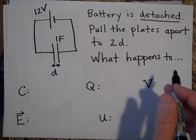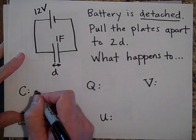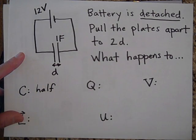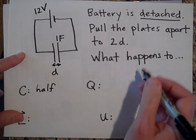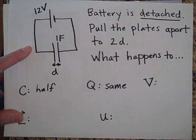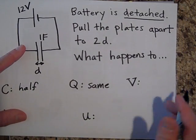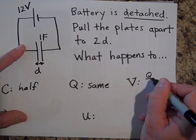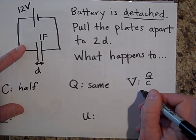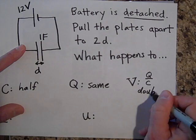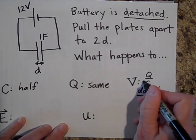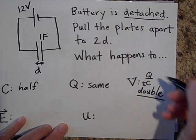Okay, so when you do pull these apart, C is going to go to half. So C will be halved. But the battery is detached so the Q can't go anywhere. So this is the same. The voltage then is, since the voltage is Q over C, if that's the same and that's half, the voltage is increased by 2. It's doubled.